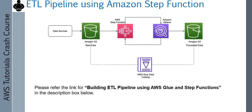Another method of creating the pipeline is using Amazon Step Functions. Amazon Step Functions can be used to orchestrate your Glue jobs and crawlers to create an end-to-end pipeline. I have created a separate video showing how to build a Glue ETL pipeline using Amazon Step Functions. Please click the link in the description box below to get details about this particular topic.